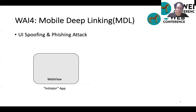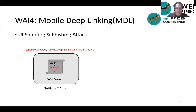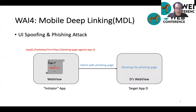Here's an example of such a phishing attack. The initiator app will first load a page containing a phishing deep link. The user clicks the phishing deep link. The initiator app will send an intent containing the phishing page to the target app. After the target app receives the intent, without any check, it shows the phishing page. The phishing attack can be avoided by adding proper access control for validating the intent.